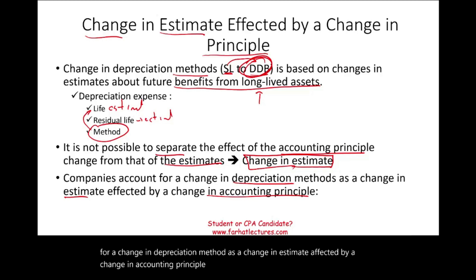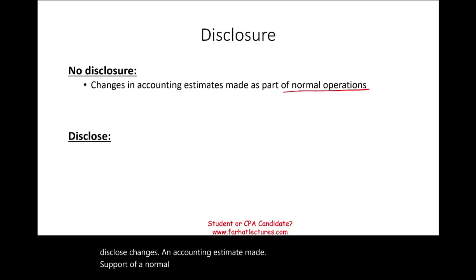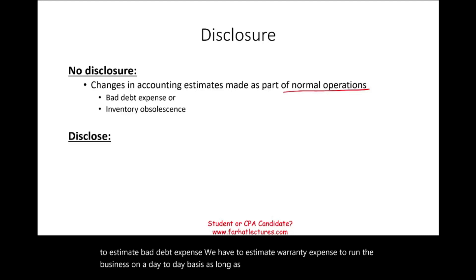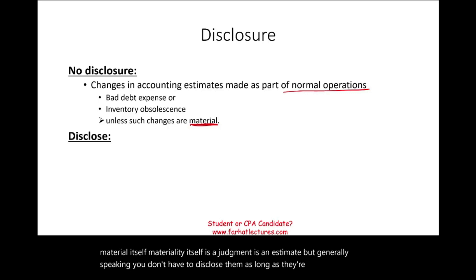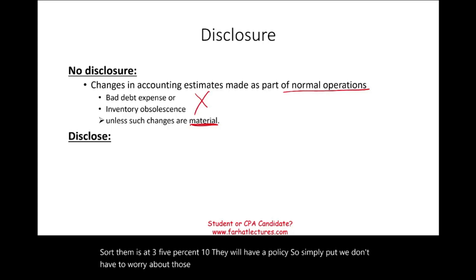What else do we need to know about estimates when it comes to disclosure? Well, here are the rules: you don't have to disclose changes in accounting estimate made as part of normal operations — for example, estimating bad debt expense or warranty expense to run the business on a day-to-day basis. As long as those estimates are immaterial, you don't have to disclose them. Materiality itself is a judgment and an estimate, and the company will define what materiality means for them — whether it's 3%, 5%, or 10%. You don't want to fill your financial statement notes with explanations about every routine estimate.